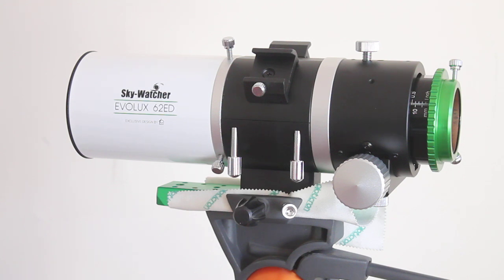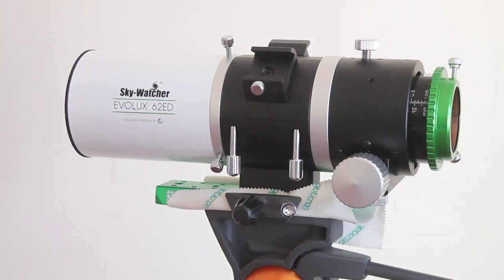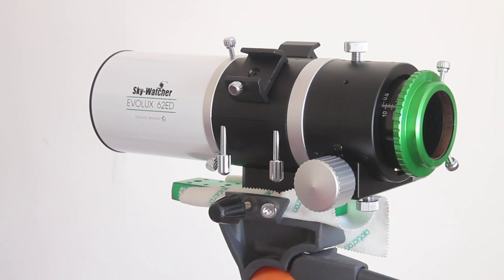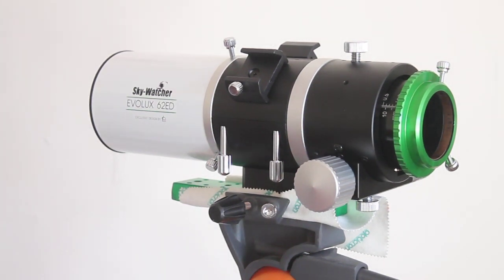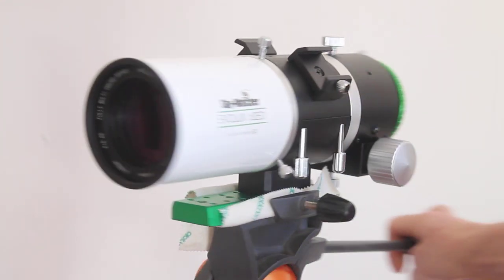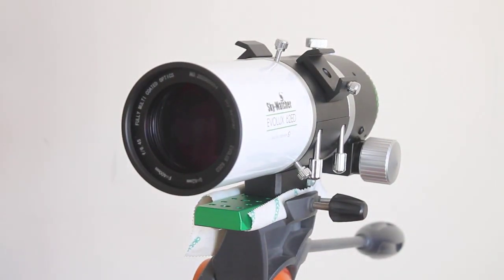The construction is second to none. So what we have here is a 62mm APO lens assembly, ED glass. It is a 400mm f6.45, but there is a focal reducer corrector that you can get that makes it into a 360mm f5.8, and the focal reducer is available to purchase separately.